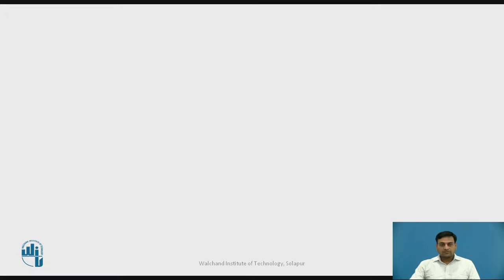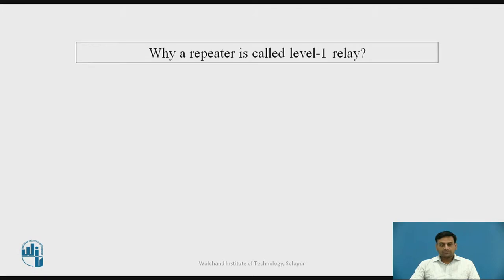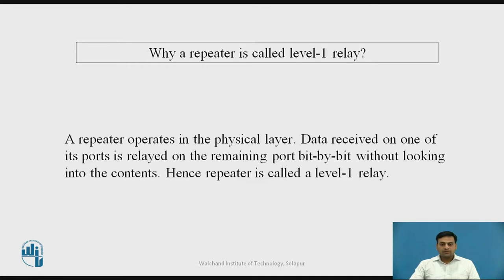Before starting this topic, try to answer this question: Why are repeaters called Level 1 Relay? You may pause the video and try to find the answer. The answer is that a repeater operates at the physical layer. Data received on one of its ports is relayed or transmitted on all remaining ports bit by bit without looking into the content. Hence, the repeater is called a Level 1 Relay.